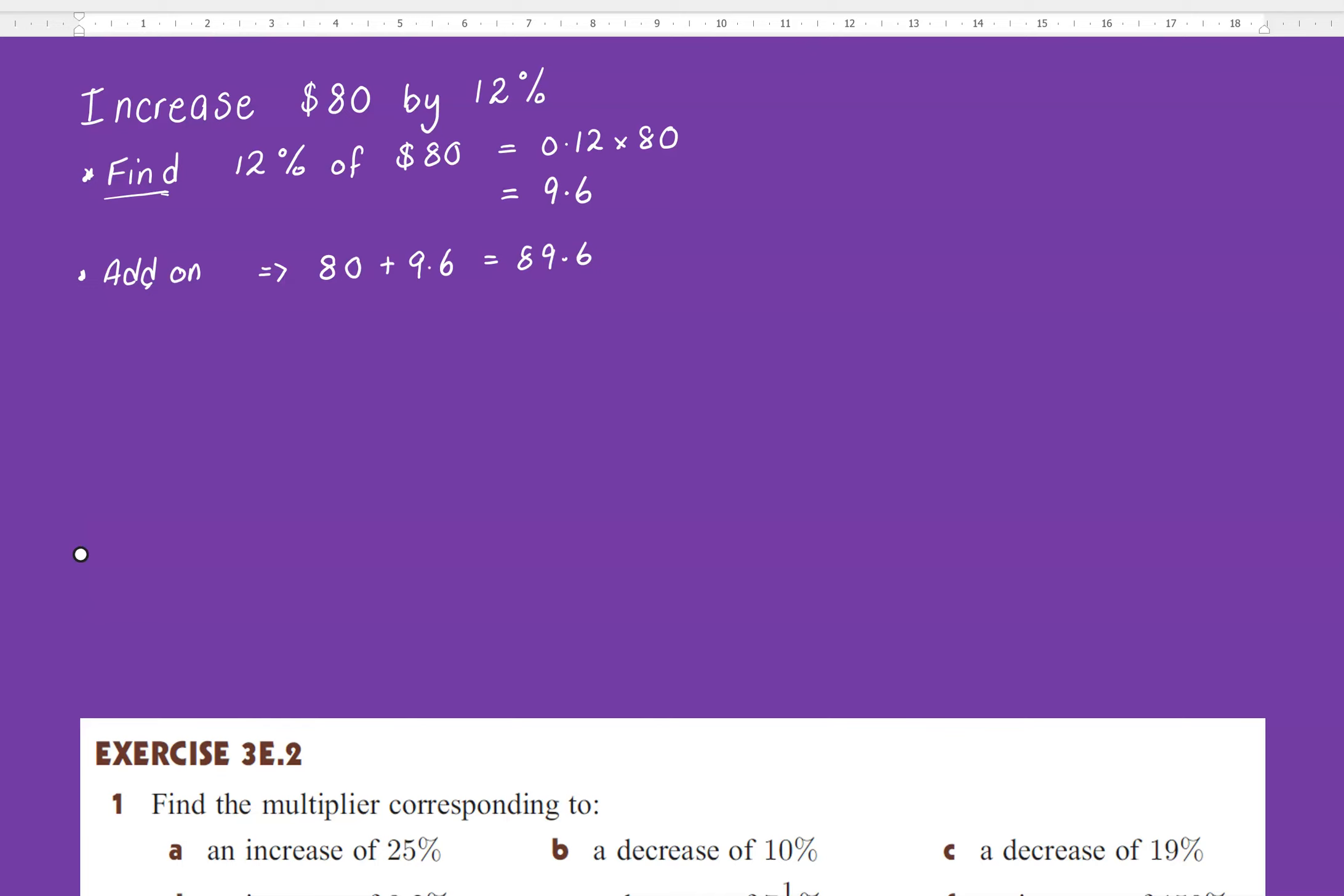Now let's watch this magic. Grab your calculators and go 80 times 1.12. And when you pop that in your calculator, that's going to give you straight away 89.6. You're doing it in one step. That's it all done and dusted.